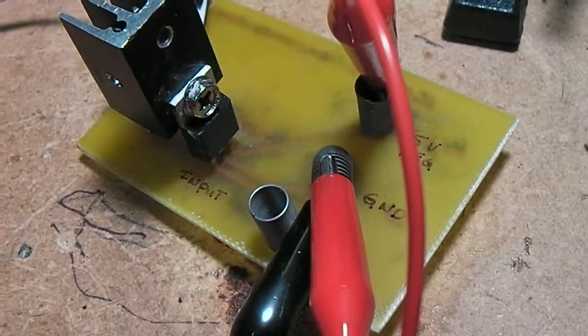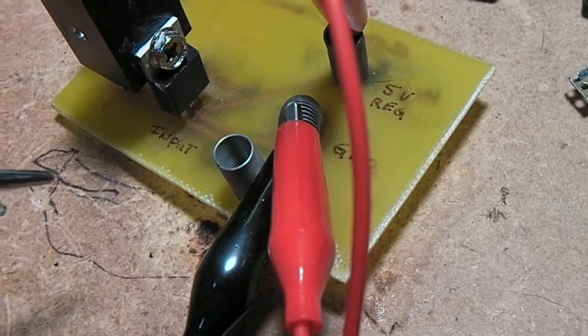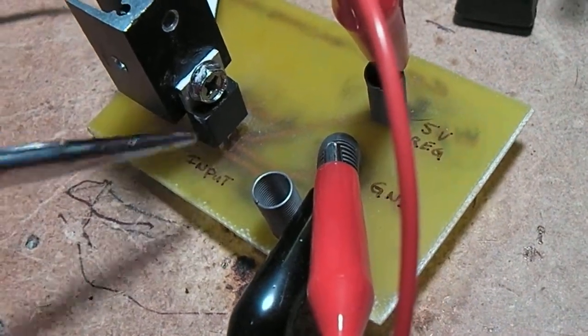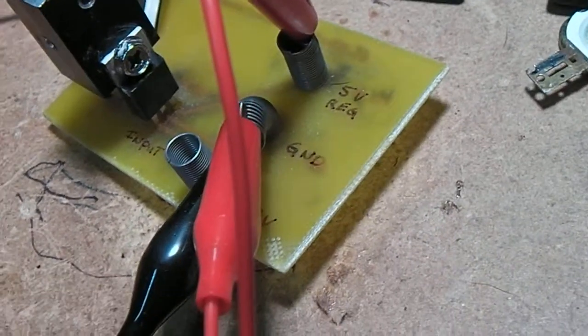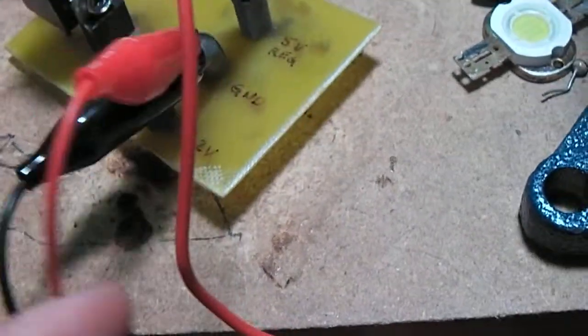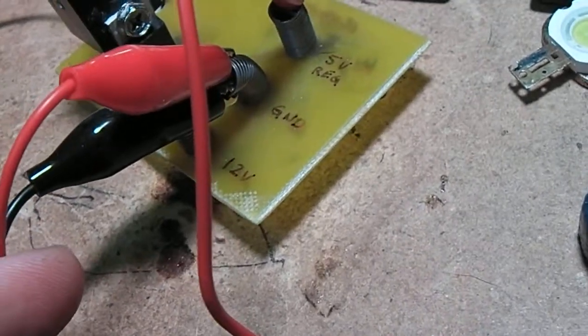This is just a 7805 voltage regulator, and it's going off the 12-volt wall wart. You pull 12 volts off the other side that's not regulated.